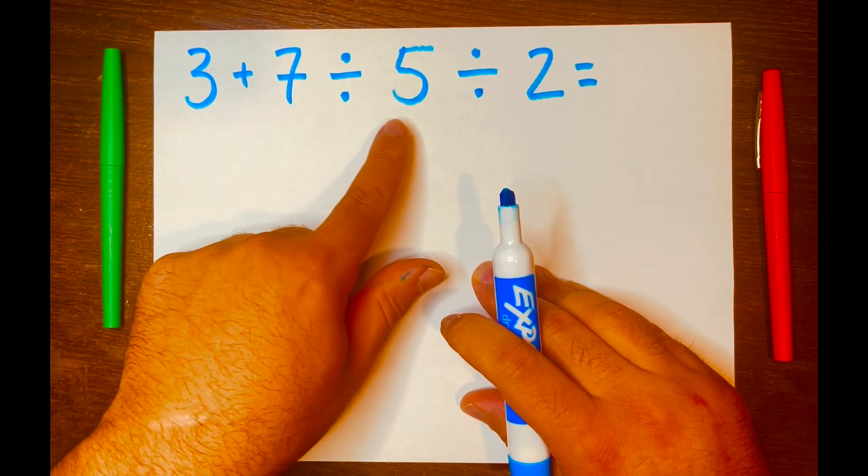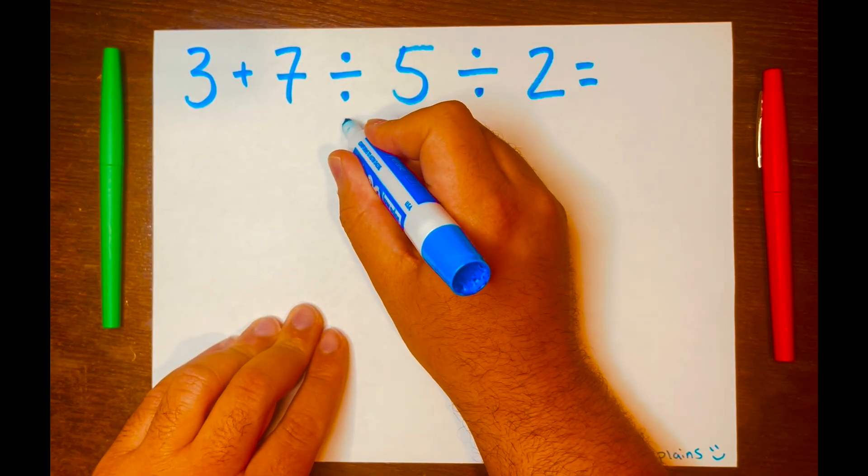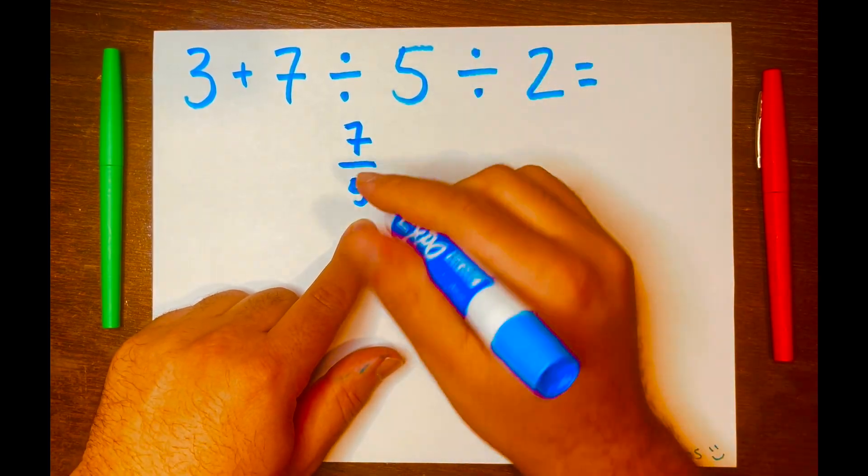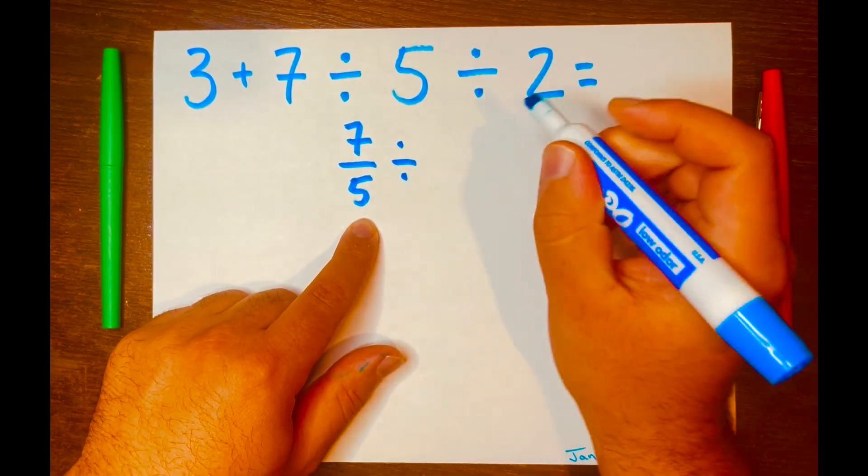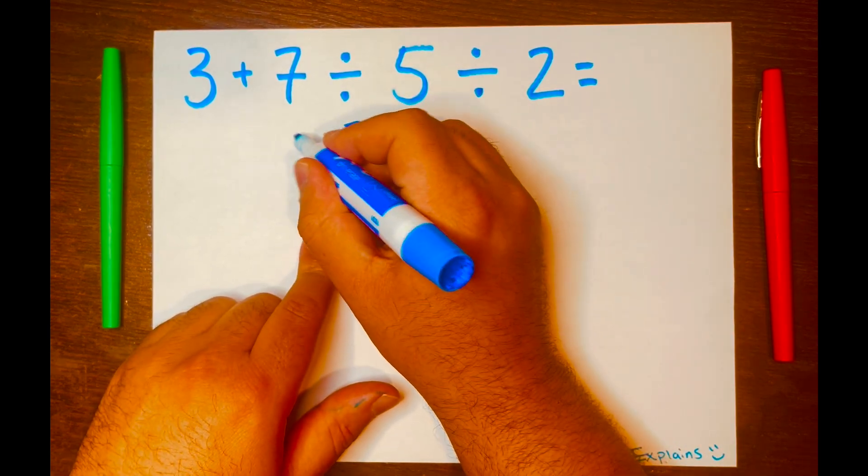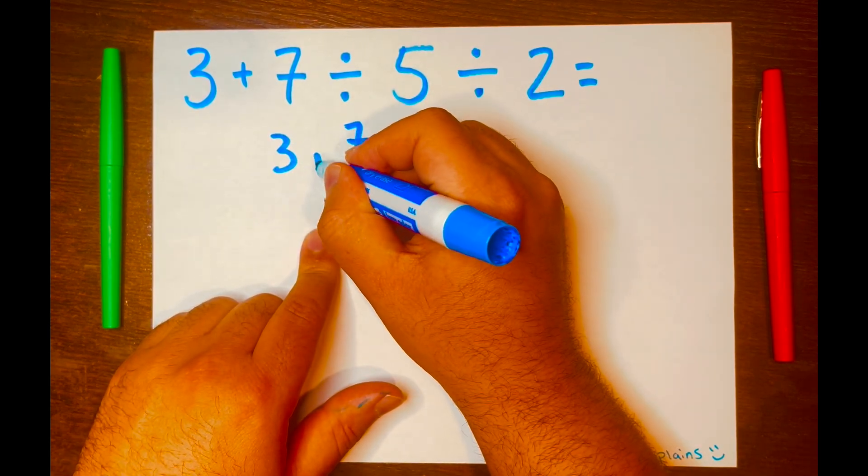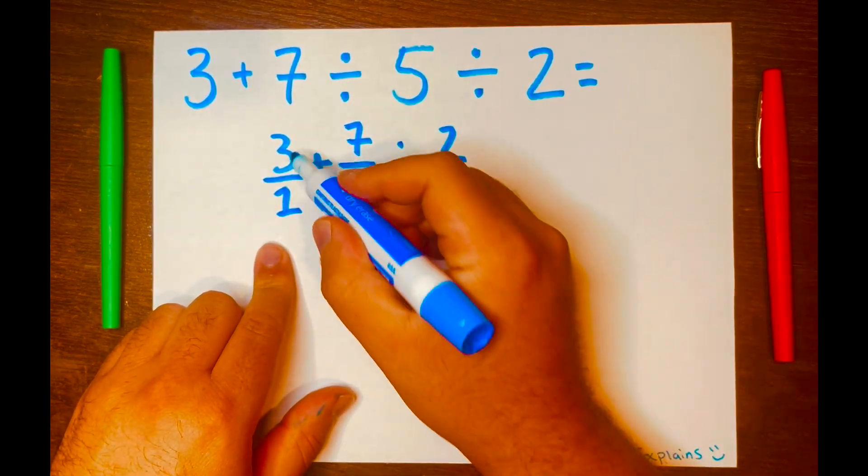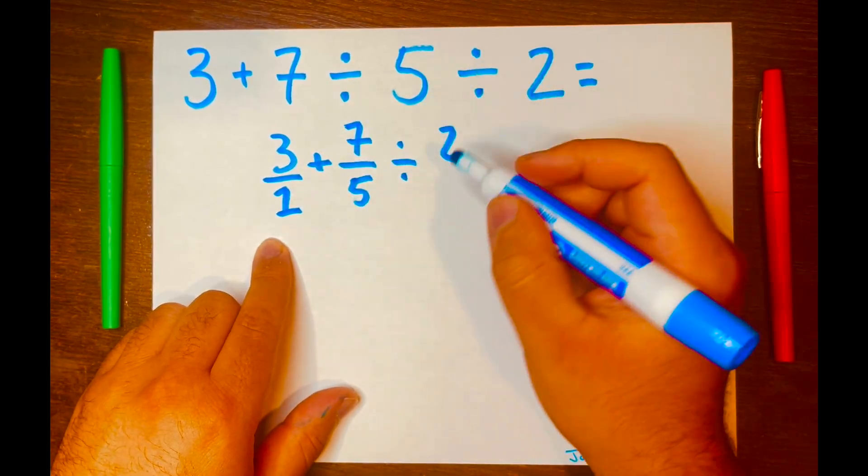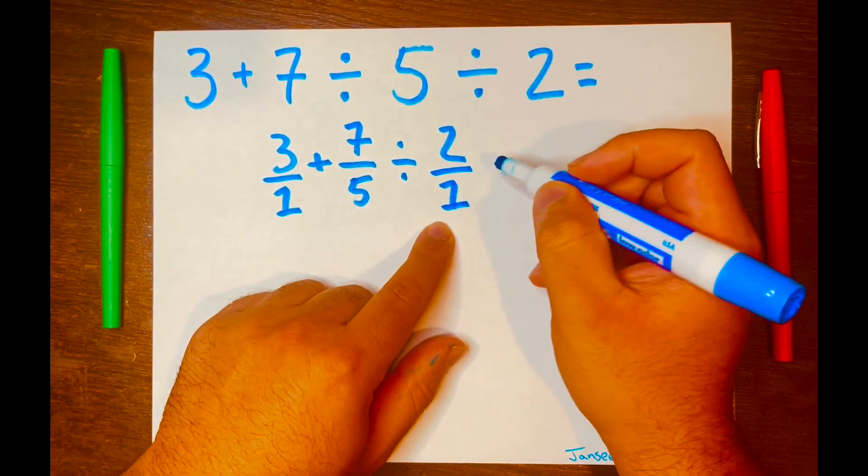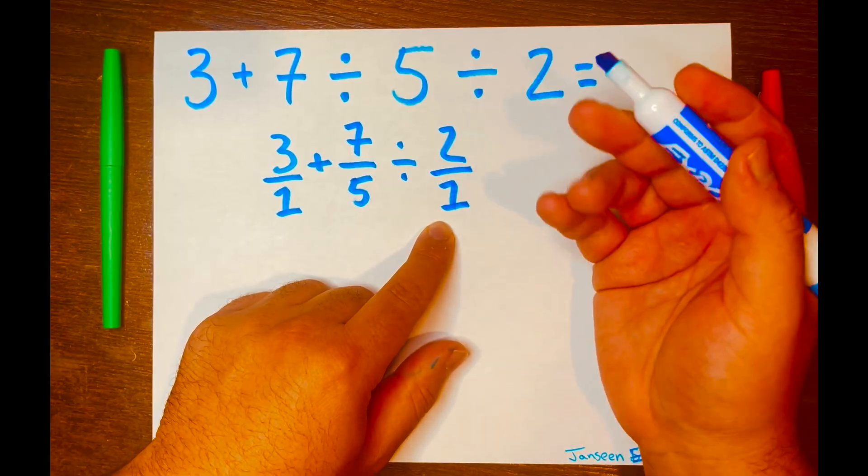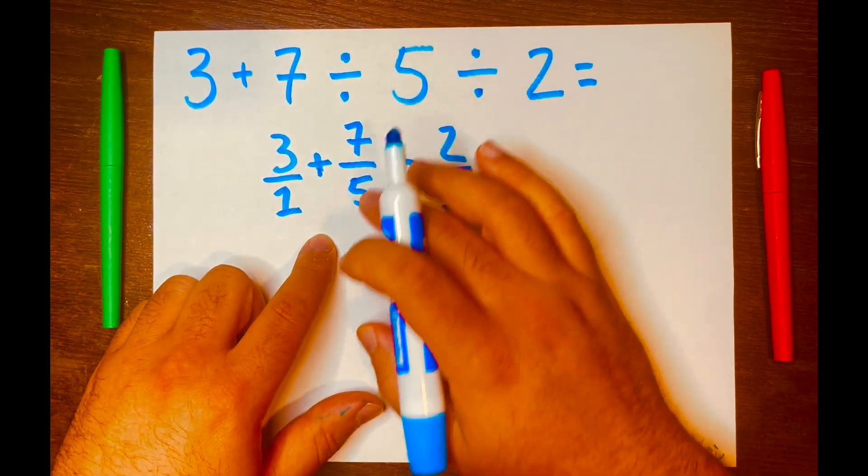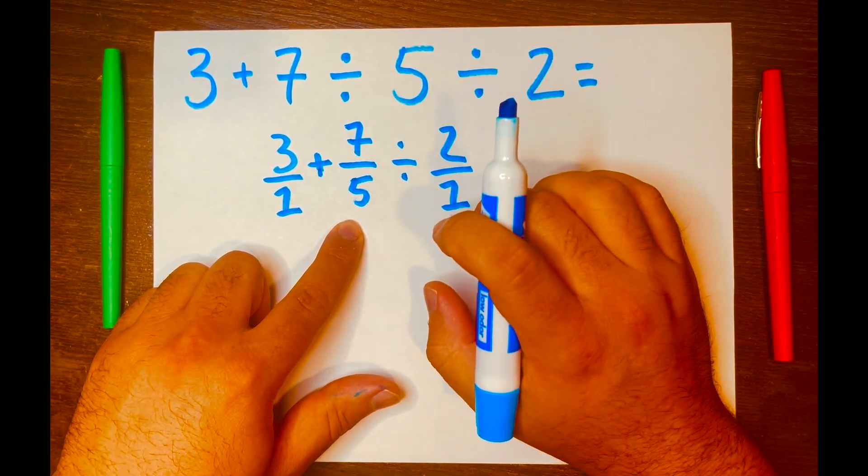So 7 divided by 5 will go first and I want to write 7 divided by 5 in a fraction form to make the math easy and bring down the division symbol down, the 2 down, the 3 down, and the addition symbol down. And I want to turn the 3 into a fraction to make the math easy. 3 over 1 equals 3 does not change to 3 and 2 over 1 which equals 2 does not change to 2. So now we have 3 over 1 plus 7 over 5 divided by 2 over 1.